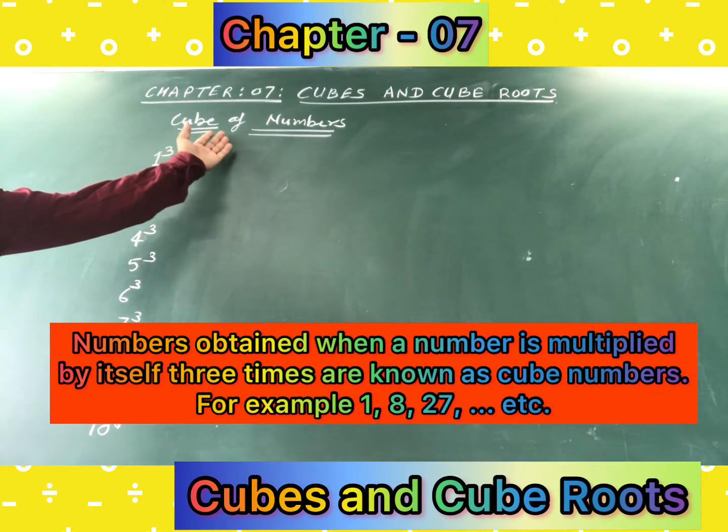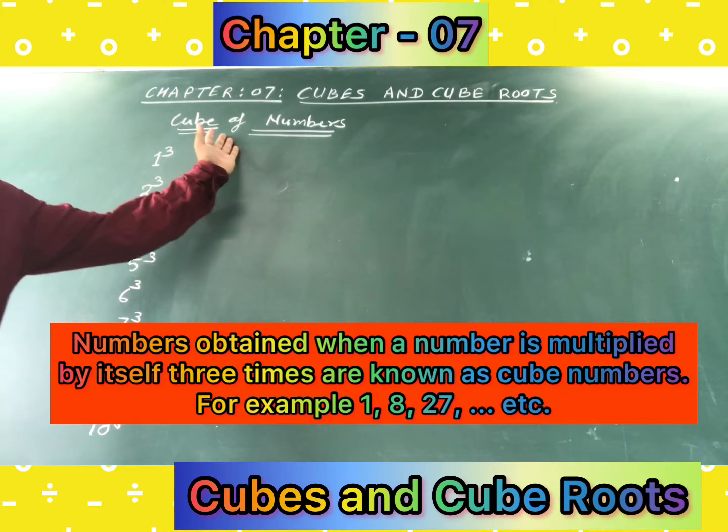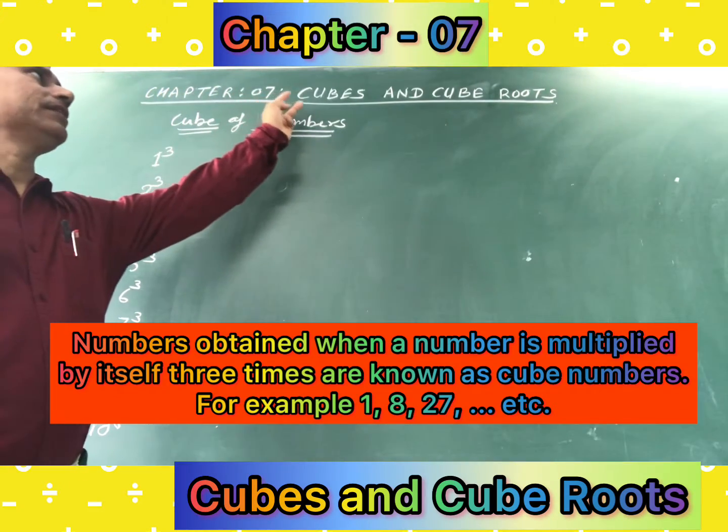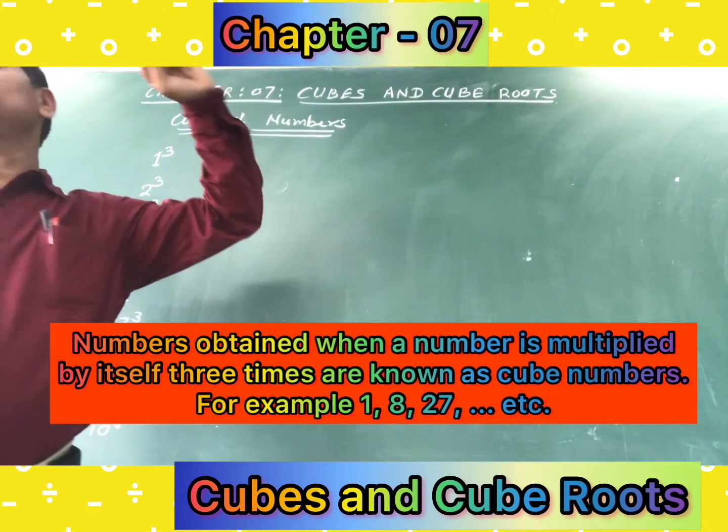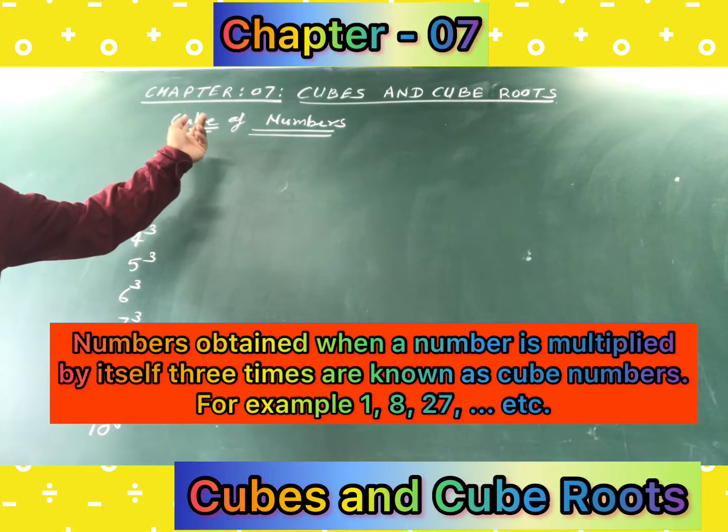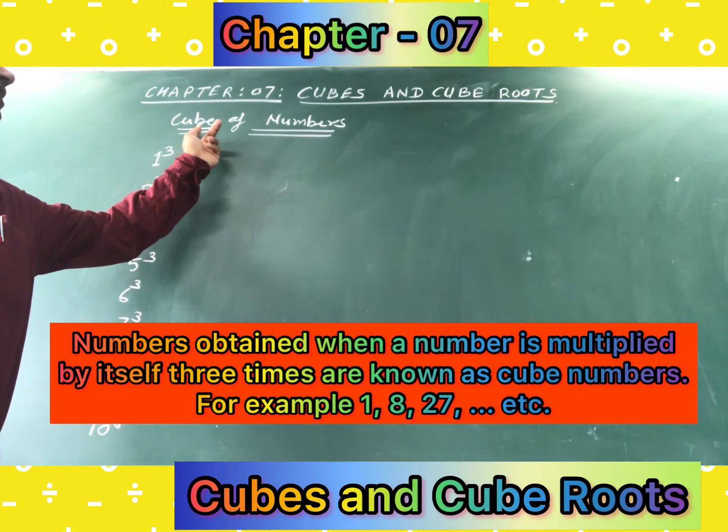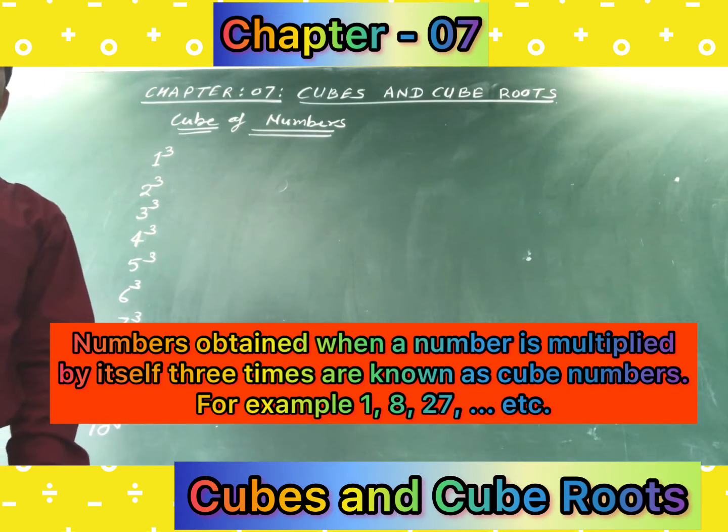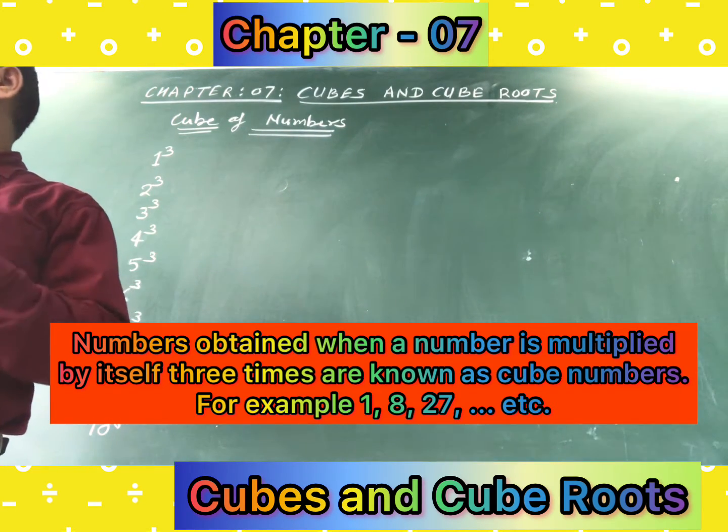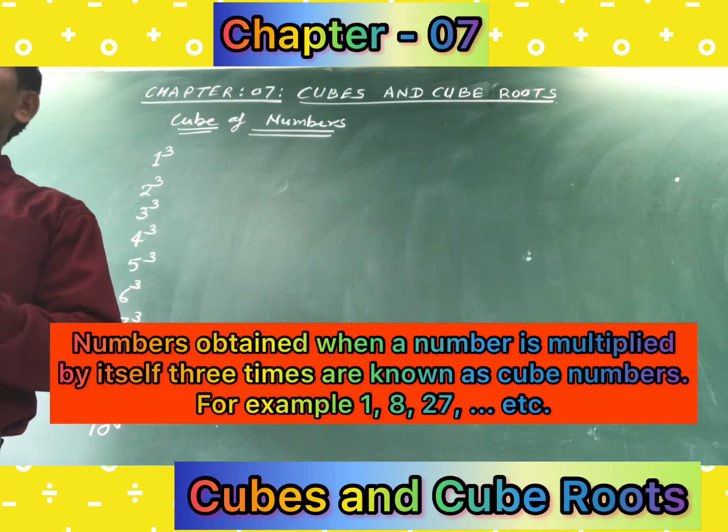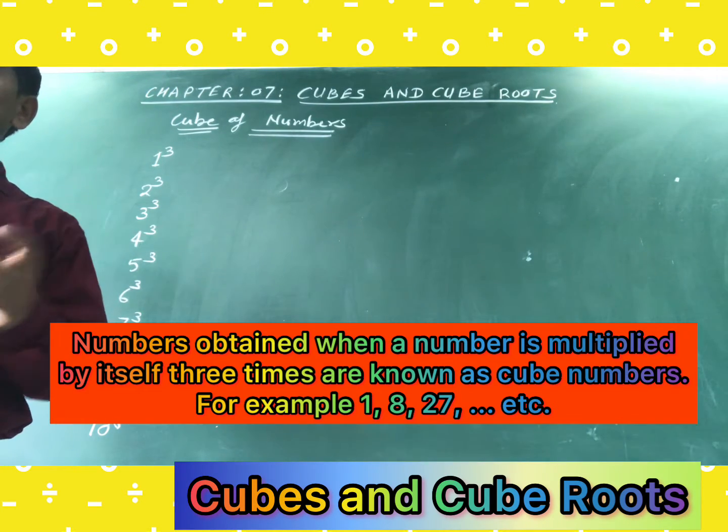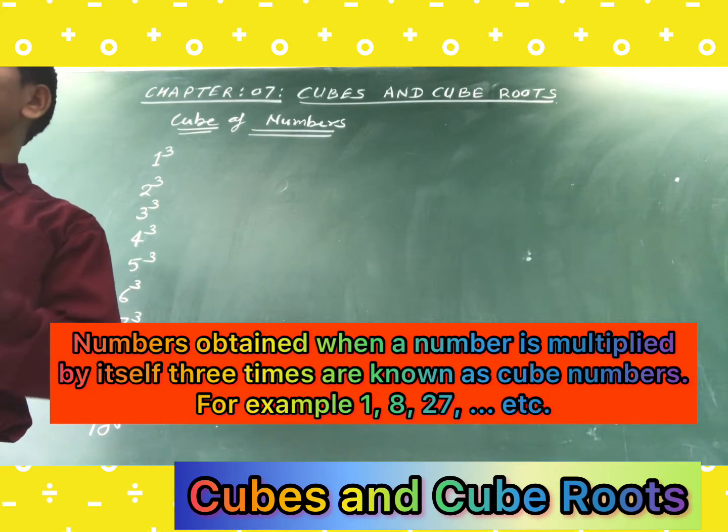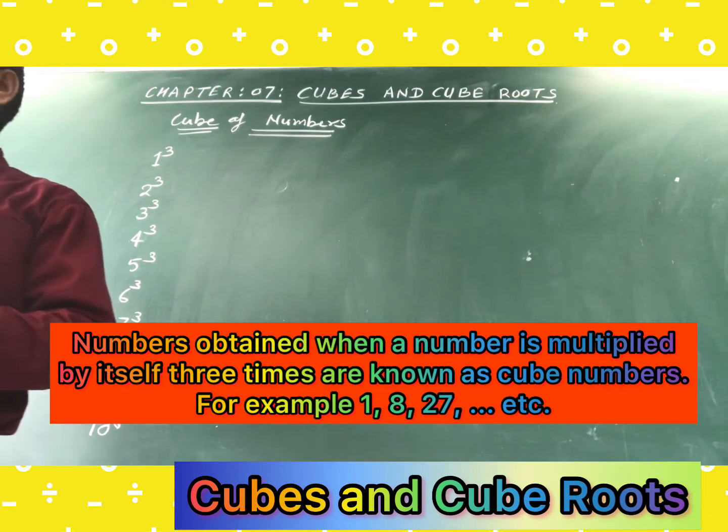Here, according to the title of this chapter number 7, that is cubes and cube roots, so first of all I want to tell you that cube means if a number is multiplied by itself three times, then you will get the cube of a number.